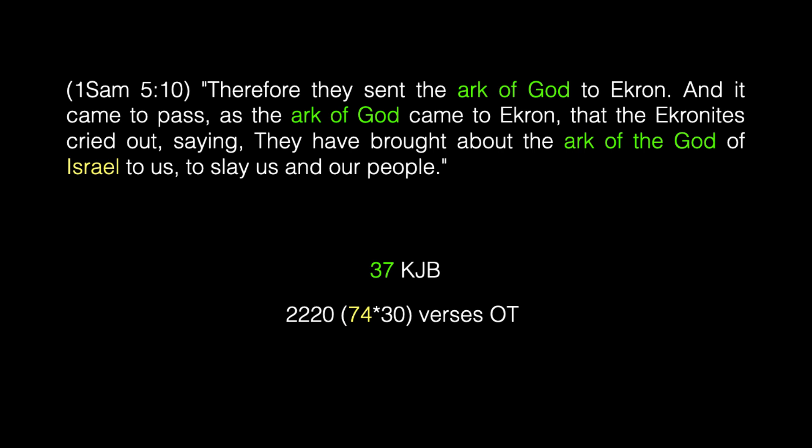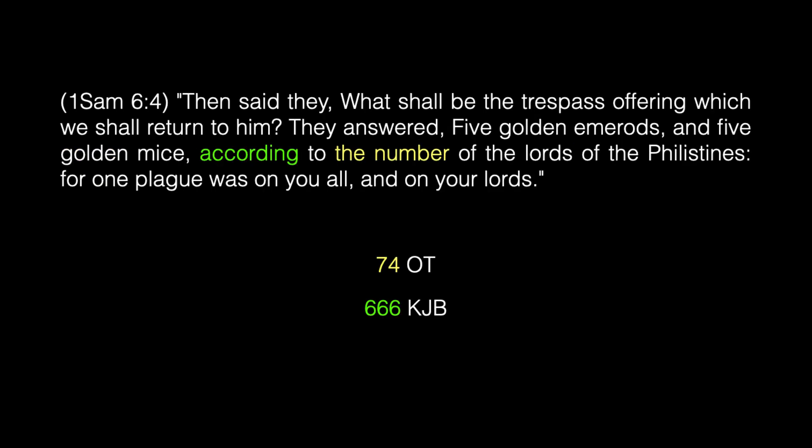Israel occurs in 2,220 verses of the Old Testament. Let's look at 1 Samuel 6:4: 'Then said they, What shall be the trespass offering which we shall return to him? They answered, Five golden emerods and five golden mice, according to the number of the lords of the Philistines, for one plague was on you all and on your lords.' The word 'according' occurs 666 times in the Old Testament of the King James Bible, and the phrase 'the number' occurs 74 times in the Old Testament — the value of the name Jesus.